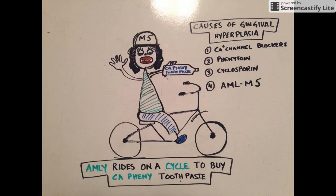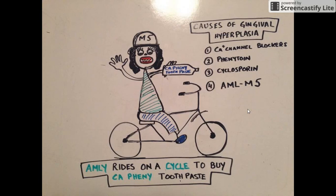One more important condition associated with gingival hyperplasia is AML M5. AML stands for Acute Myeloid Leukemia, and M5 is the type — also called Acute Monocytic Leukemia. To remember AML M5, her name is Emily, or you can call her Mona if you want to remember that it's a monocytic leukemia.